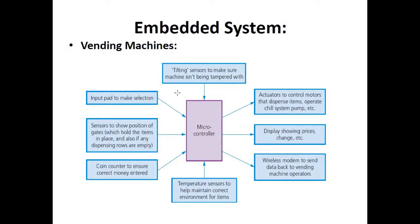A vending machine uses tilting sensors to detect tampering, actuators to control motors that dispense items, a display showing price and change, a wireless modem to send data to the operator, a temperature sensor to maintain correct environment for items, a coin counter, a sensor to show position of gates holding items, and an input pad for selection. The output is the physical product dispensed from the machine, and some models also include a thermal printer that prints a small receipt as a hard copy output.